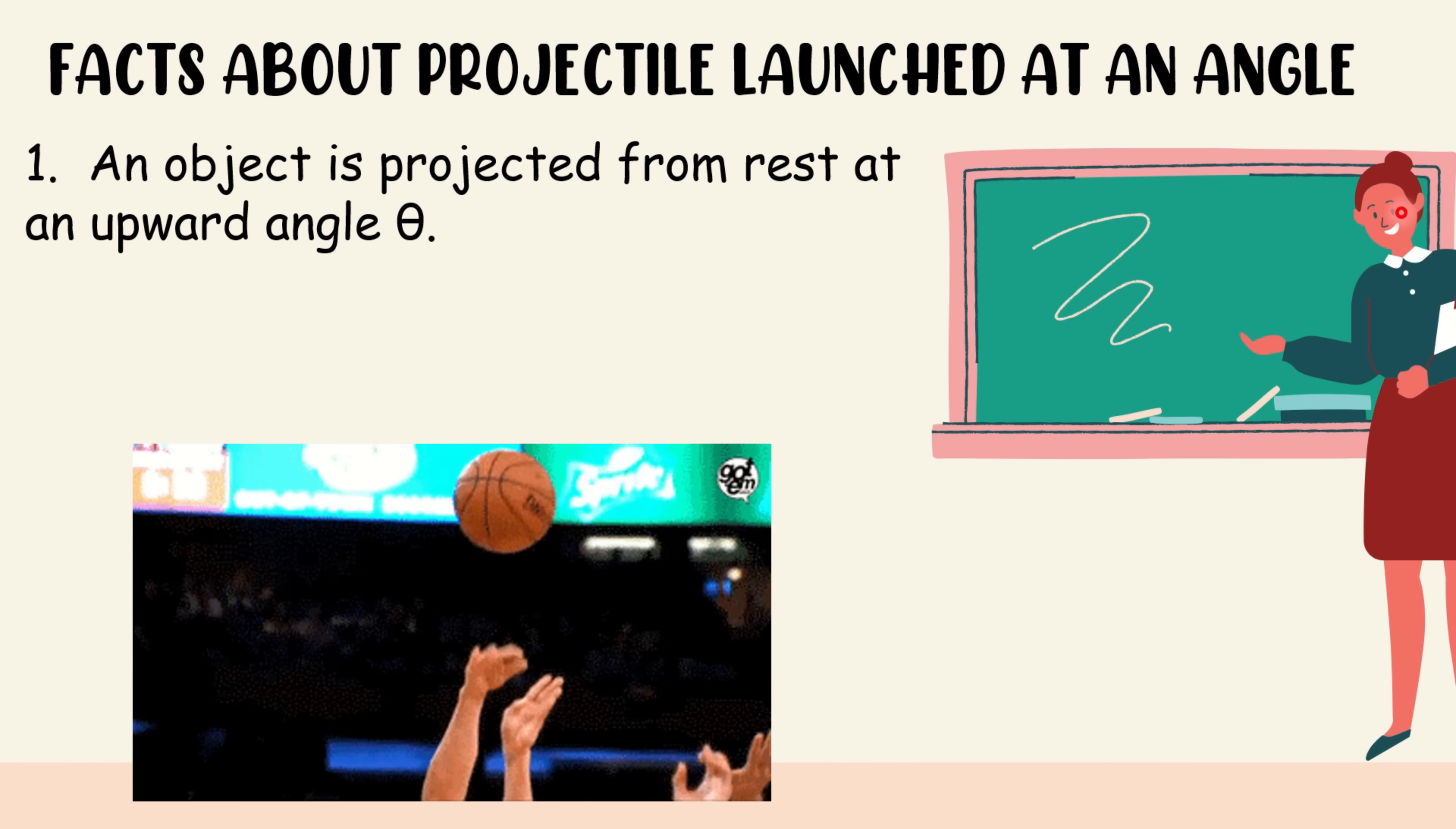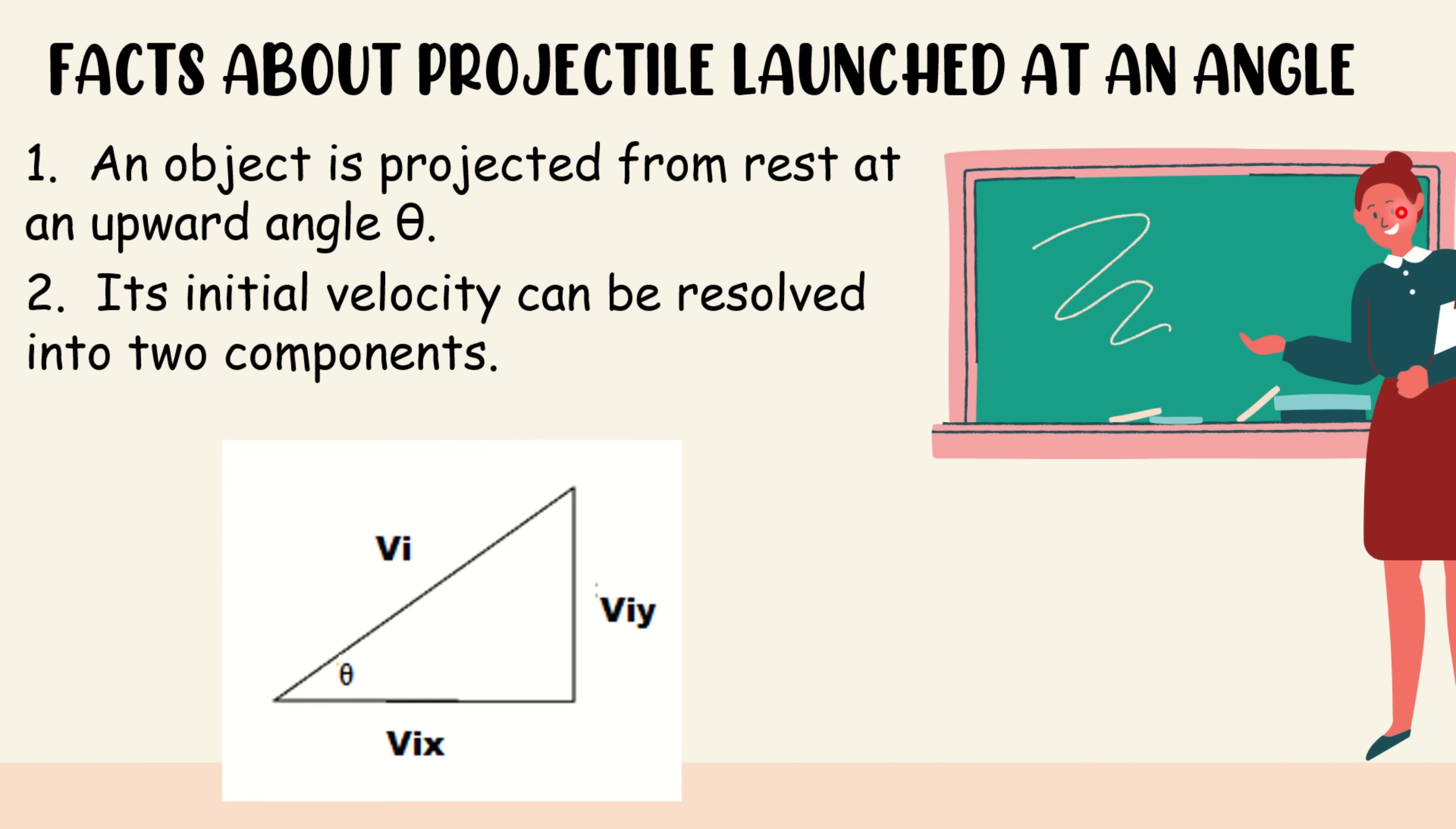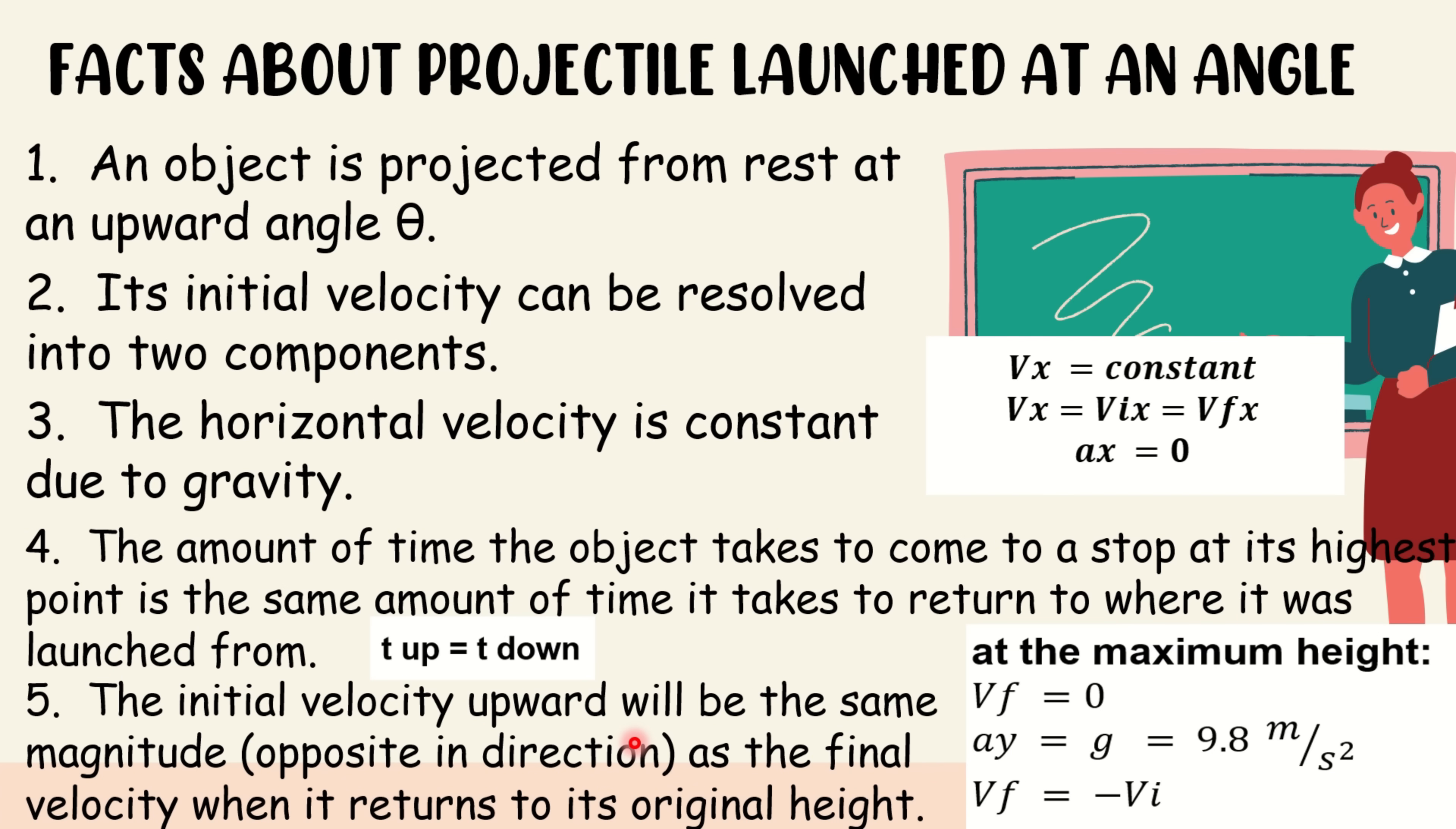First, an object is projected from rest at an upward angle theta. Just like this scenario, the ball started from rest where Stephen Curry is holding the ball. Second, its initial velocity can be resolved into two components. As you can see, we have the horizontal and the vertical component. Third, the horizontal velocity is constant due to gravity. A constant horizontal velocity that moves in the same direction as the launch, the acceleration of which is zero. Fourth, the amount of time the object takes to come to a stop at its highest point is the same amount of time it takes to return to where it was launched from. And lastly, the initial velocity upward will be the same magnitude as the final velocity when it returns to its original height. So these are the facts about projectile launch at an angle.